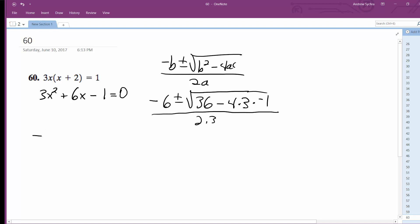All right, so then we get -6 ± √(36 + 12) all over 6. Continuing on, so it's -6 ± √(36 + 12), which is 48, all over 6.